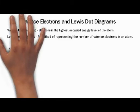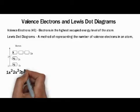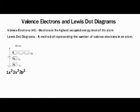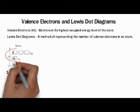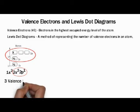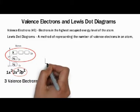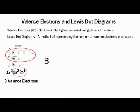Let's explain what a valence electron is. This is the electron configuration of boron. Boron has five electrons, and it has an electron configuration of 1s2, 2s2, 2p1. The highest occupied energy level is energy level 2. You can see that there are three electrons in energy level 2: 2s2 and 2p1. Since there are three electrons in the highest occupied energy level, we say there are three valence electrons.